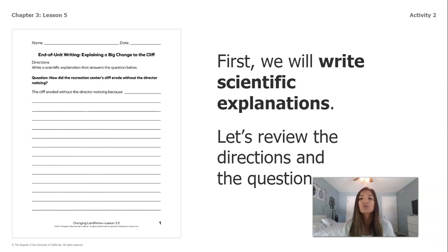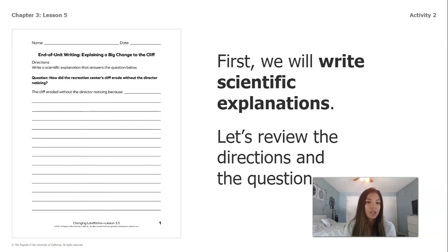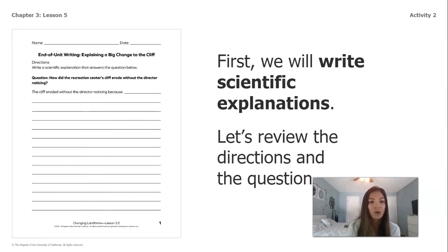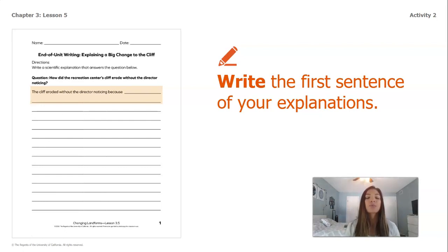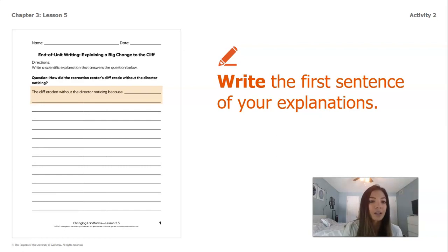Let's review the directions and the question. We're going to write a scientific explanation that answers the question: How did the recreation center's cliff erode without the director noticing? We already wrote the first sentence stem for you because it's really important in a scientific explanation to write in complete sentences. The sentence stem is: 'The cliff eroded without the director noticing because _____.'